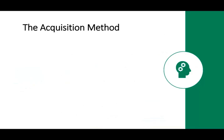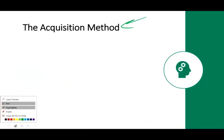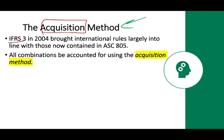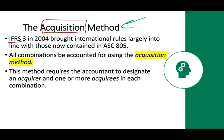If we determine we have control, we must consolidate using the acquisition method. IFRS 3 in 2004 brought international rules in line with U.S. standards — now whether it's U.S. or international, we use the acquisition method. All combinations must be accounted for using the acquisition method, which requires the accountant to designate an acquirer and one or more acquirees. Microsoft bought LinkedIn — Microsoft is the acquirer and LinkedIn is the acquiree.